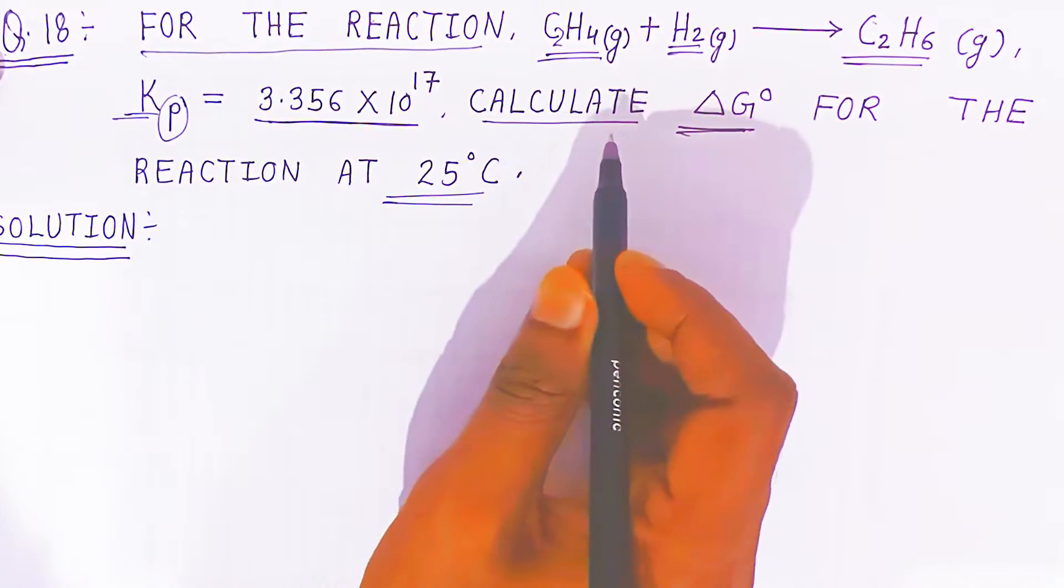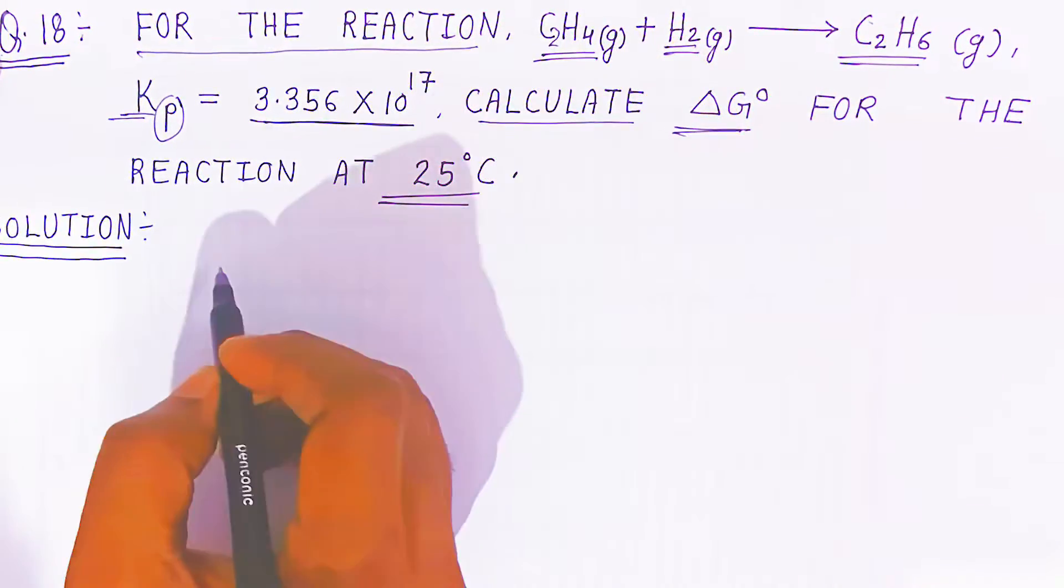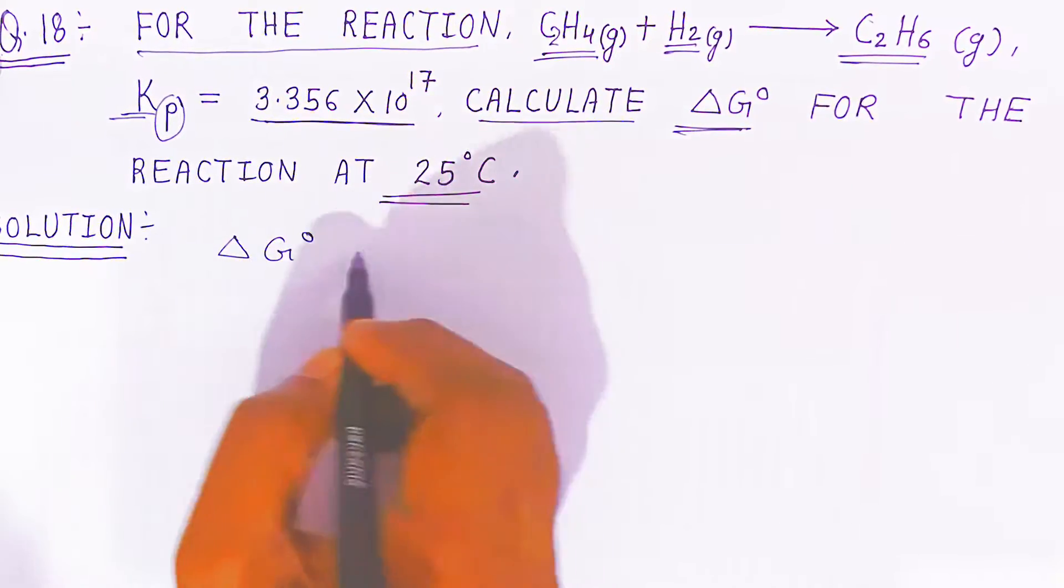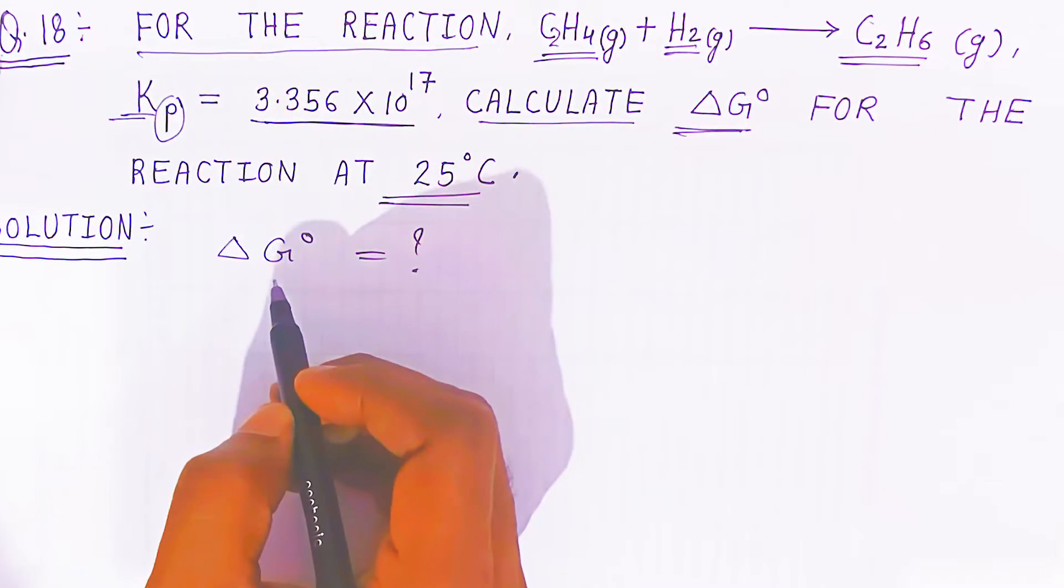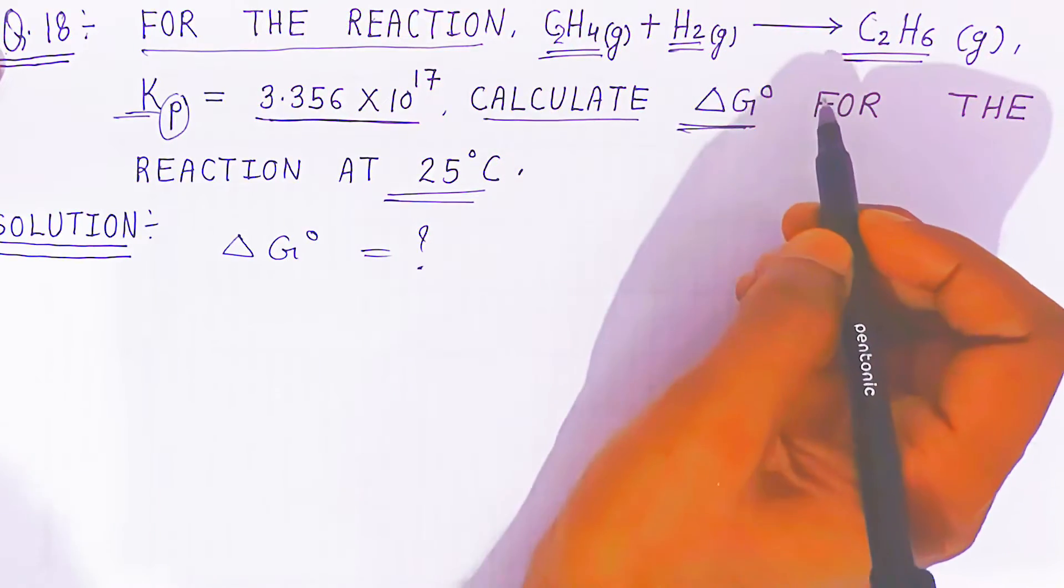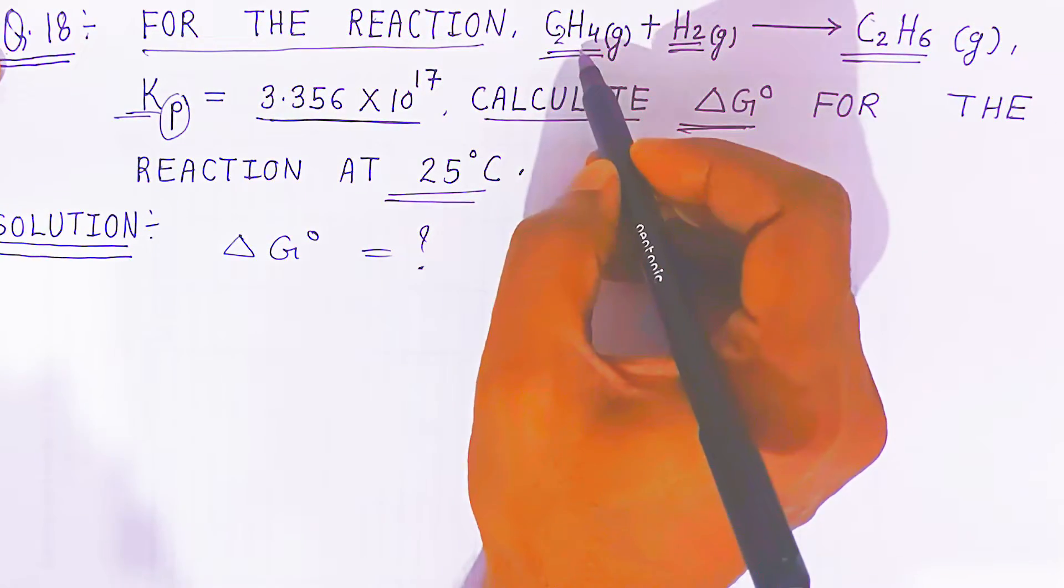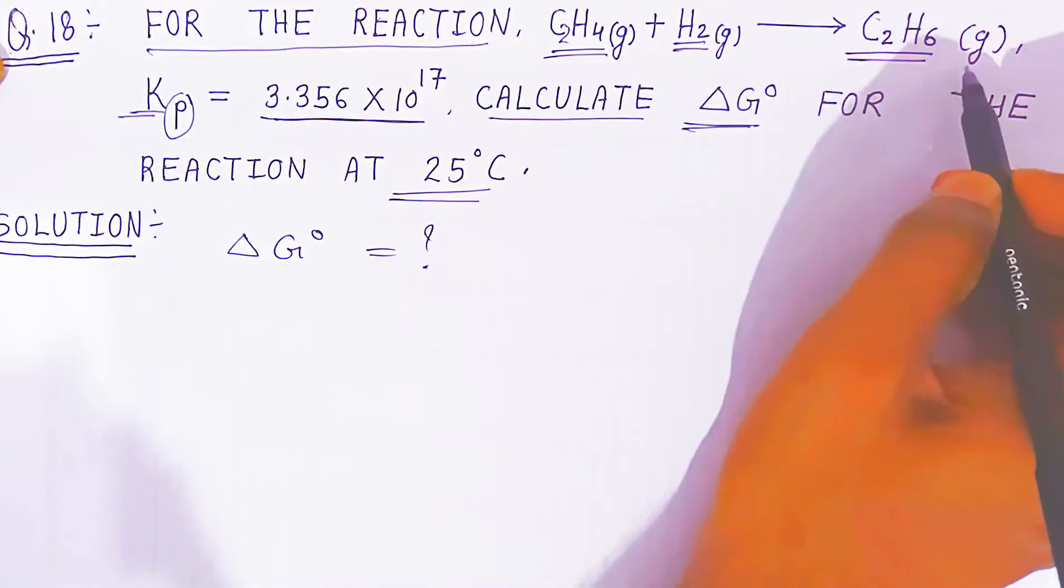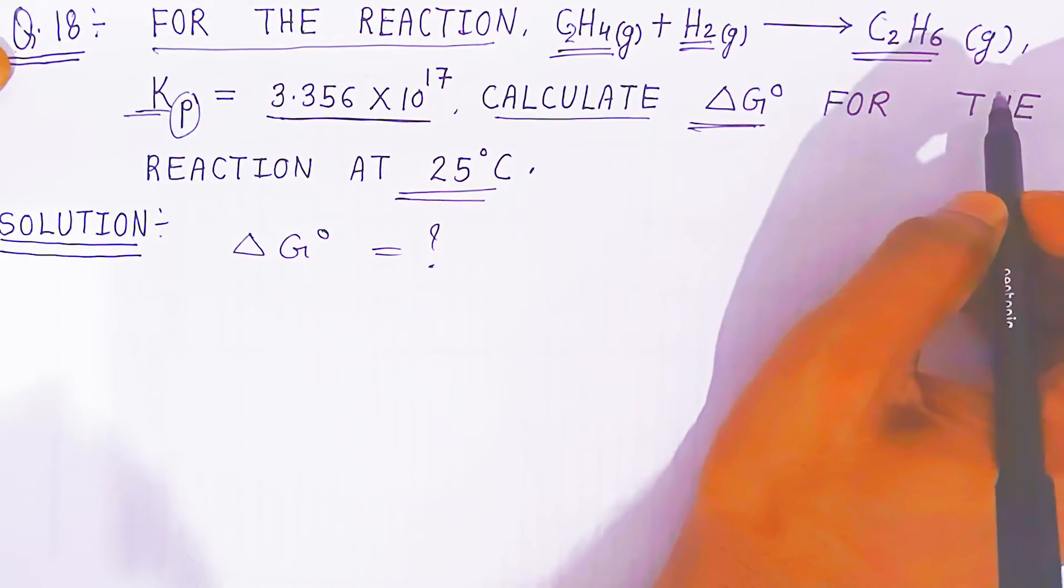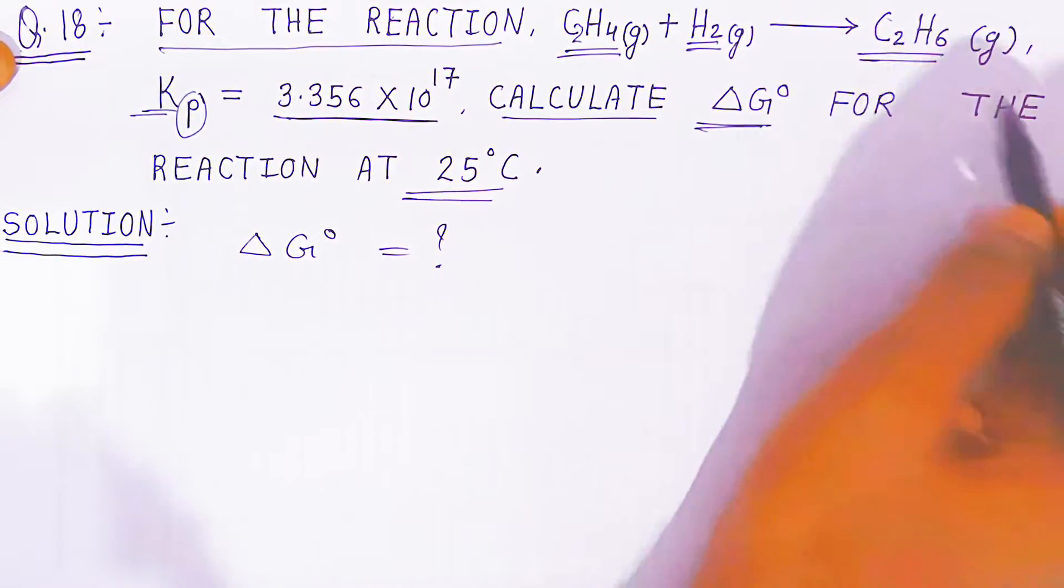Temperature is 25 degrees Celsius. So here, you have to write first what is given. You have to find the standard Gibbs energy. What will be the standard Gibbs energy of this reaction where ethene reacts with hydrogen gas, giving ethane gas?